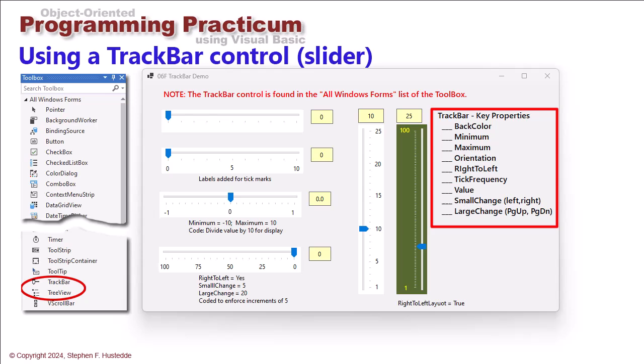Small change and large change represent the movement of that thumbtack as far as the value setting using the keyboard. Small change represents the incremental change using the left and right arrow keys, whereas large change is the incremental value using the page up and page down keys.